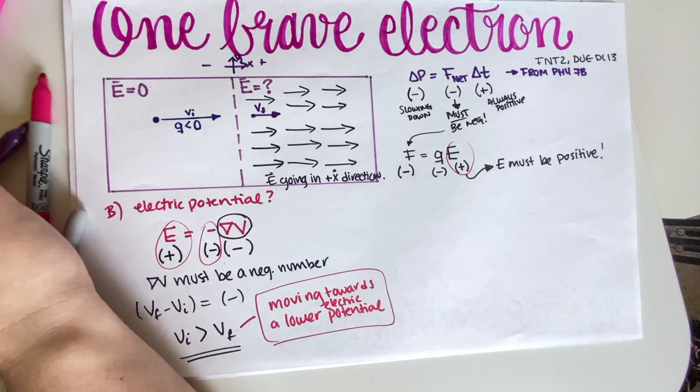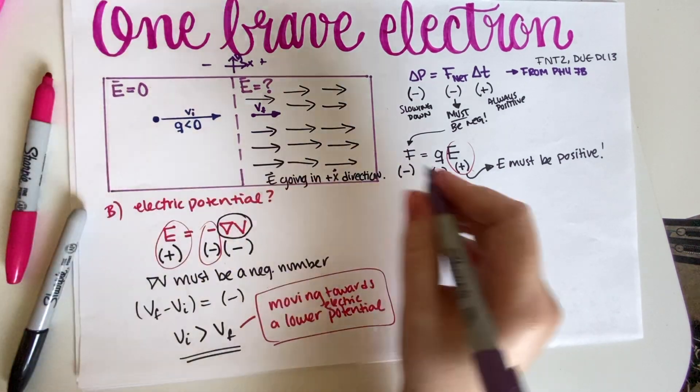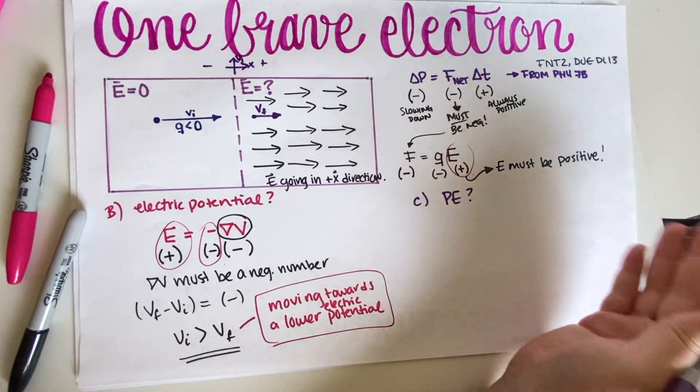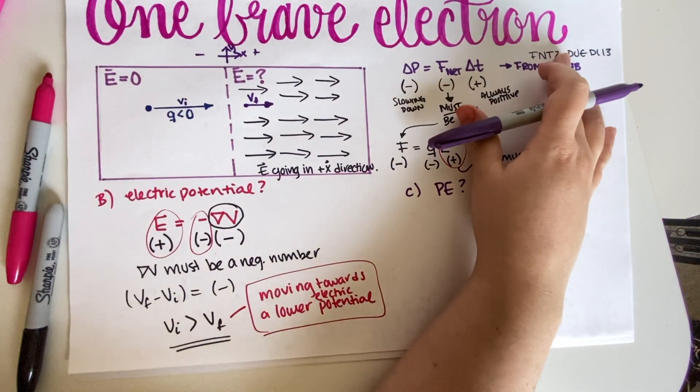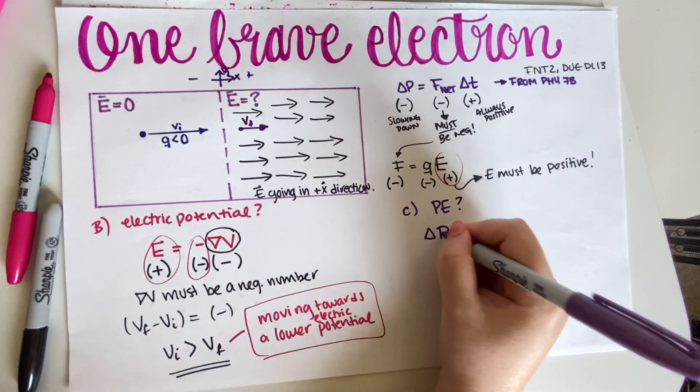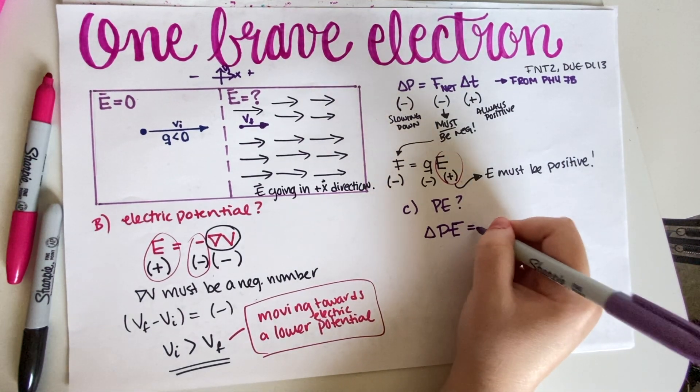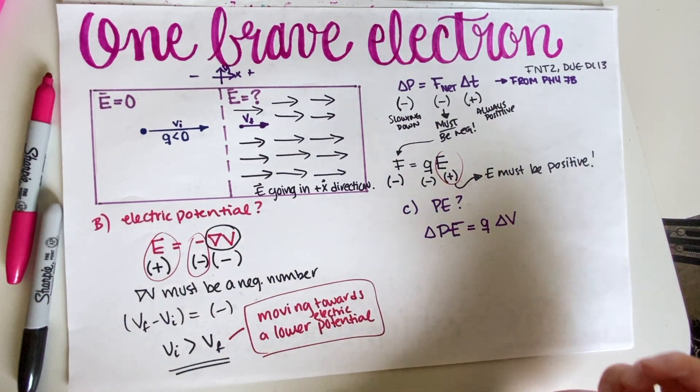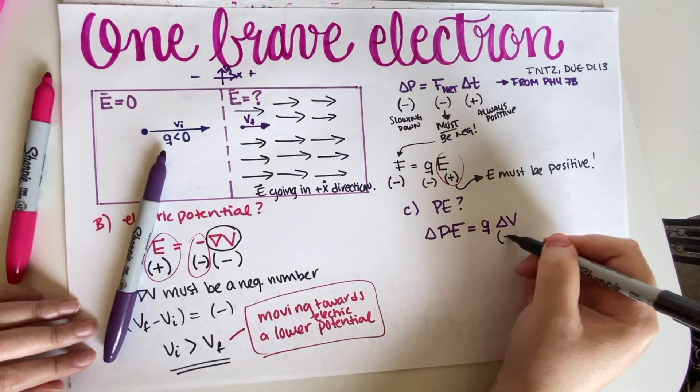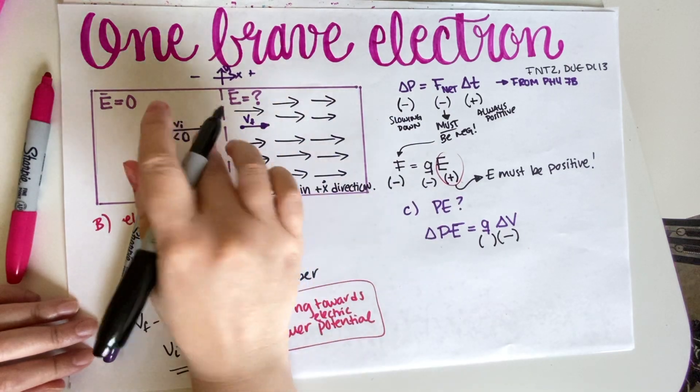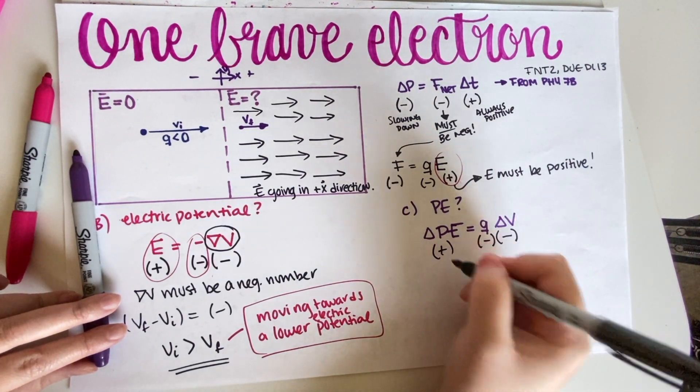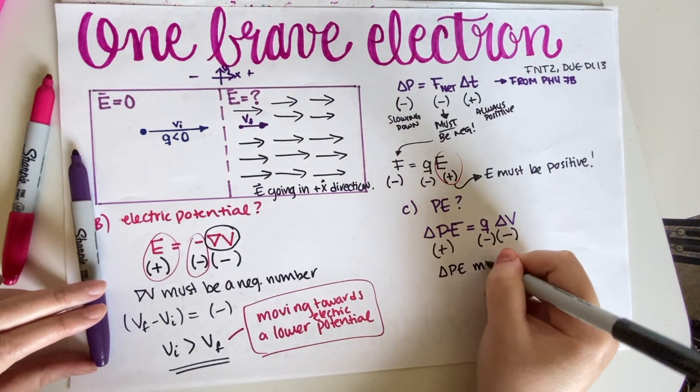So now let's look at part C. Part C, they are asking about electric potential energy. What happens to potential energy? Is it going up or is it going down? If you look at your triangle or your equations or your notes, then we have an equation that says that potential energy electric is equal to Q times delta V. And then we just do the exact same thing that we did before. Delta V from part B must be negative. Q from the problem that they gave us is negative in this case.